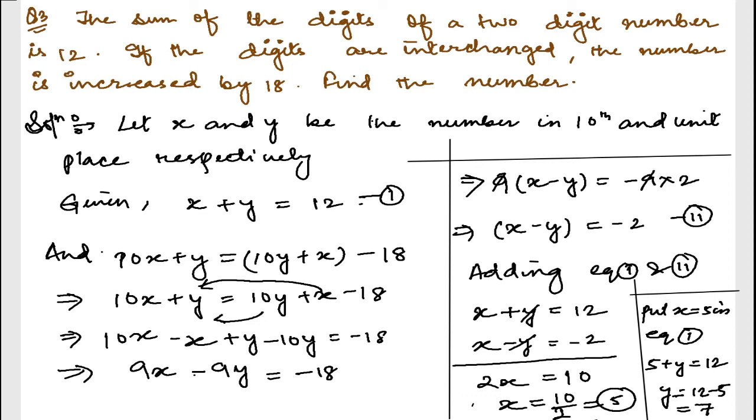Therefore, the number is 10x plus y, which will be 10 into 5 plus 7. So 10 into 5 is 50 plus 7, which is 57. And this is the number. I hope you understood this. If you find any difficulty or if you think any problem is there, please do write in the comment below. I will be there to help you. That's all. Thanks so much. We will meet in the next video.